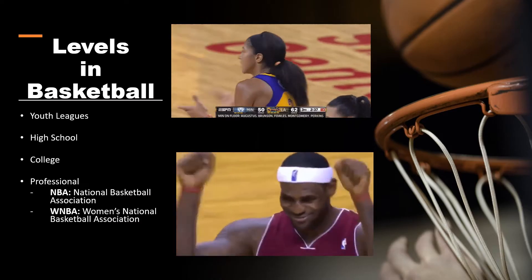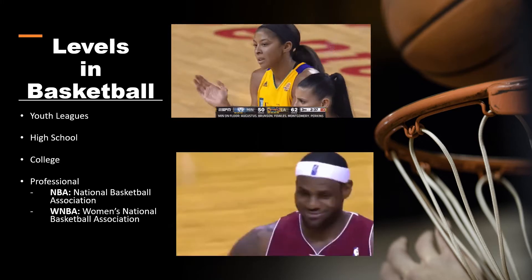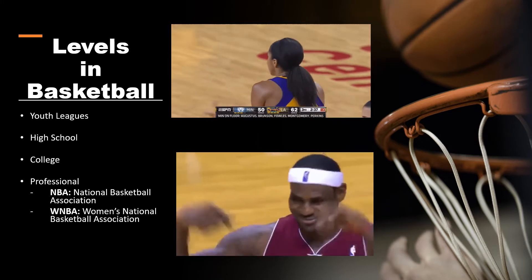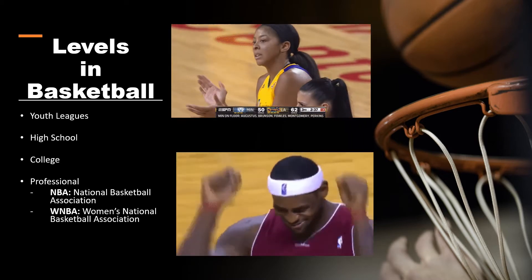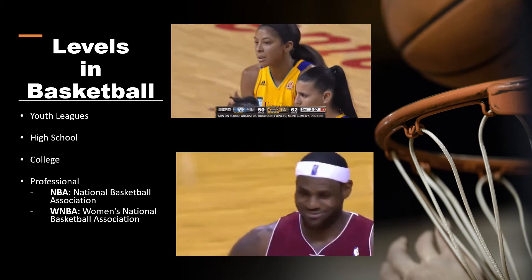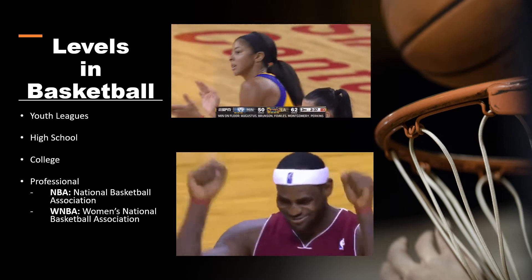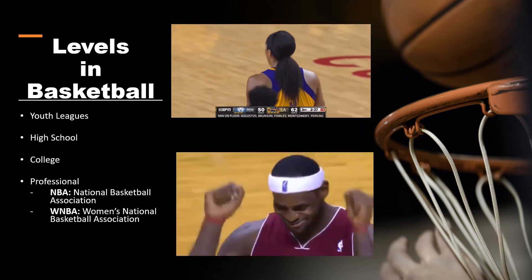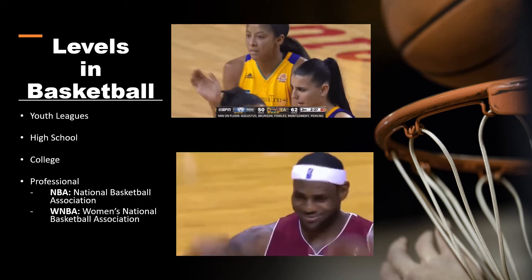Levels in basketball include youth leagues, high school, college, and professional. Two professional American leagues are the WNBA and the NBA. The NBA stands for National Basketball Association and the WNBA stands for Women's National Basketball Association.